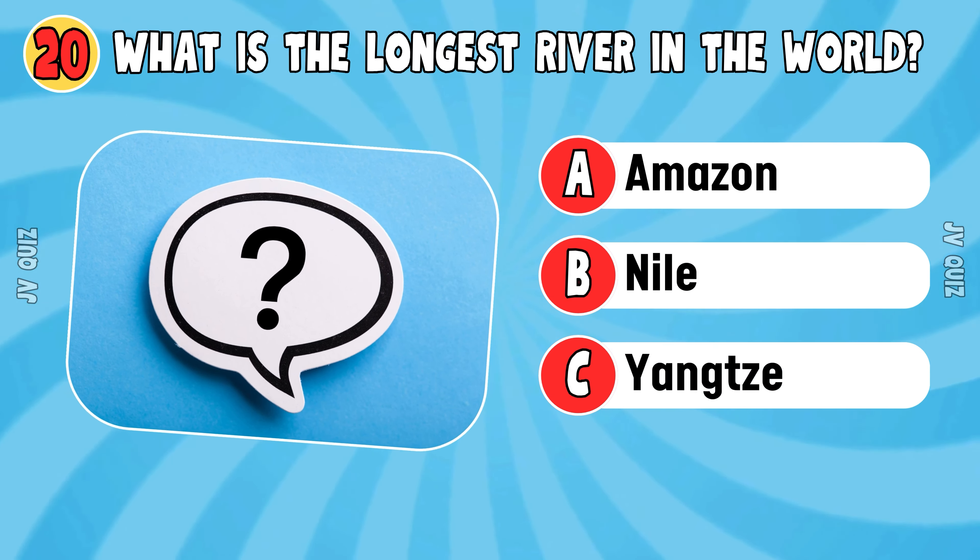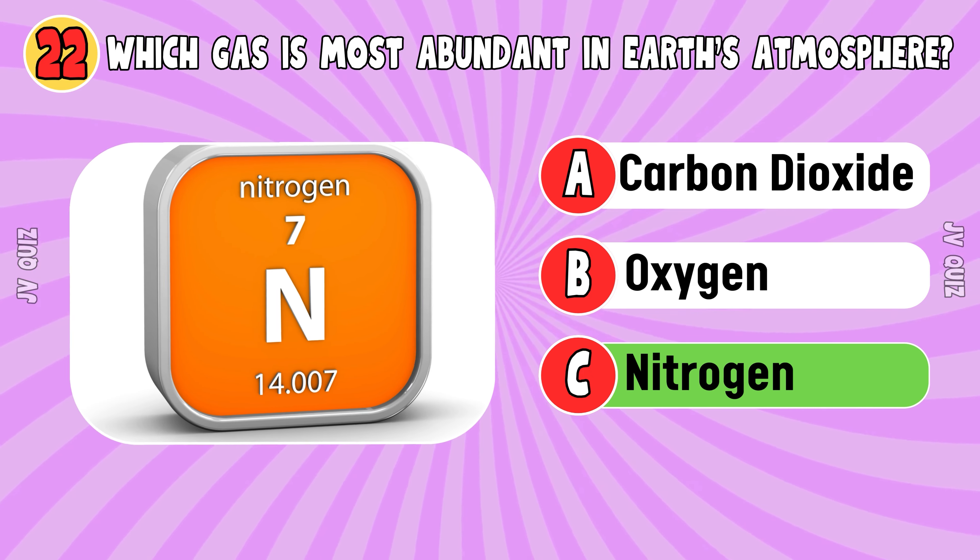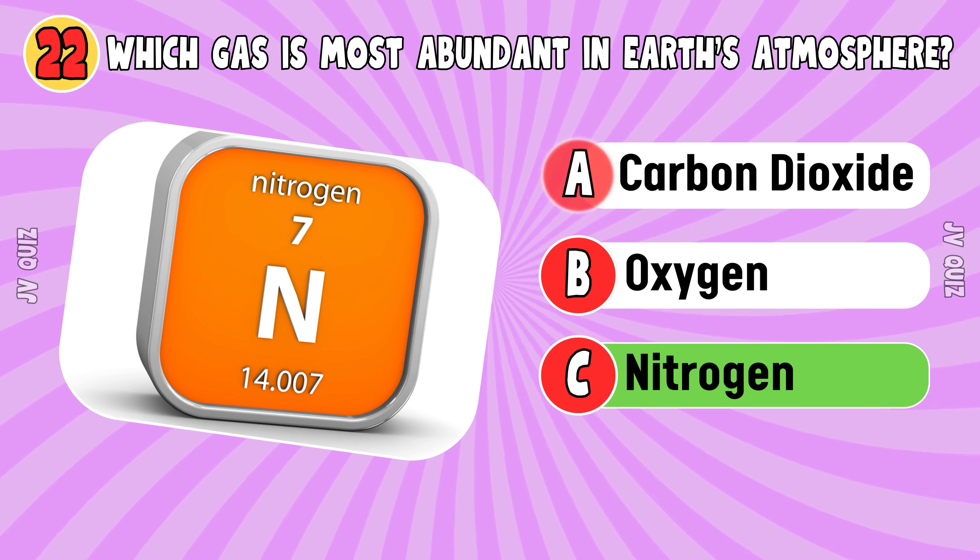What is the main ingredient in guacamole? Avocado. Which gas is most abundant in Earth's atmosphere? Nitrogen.